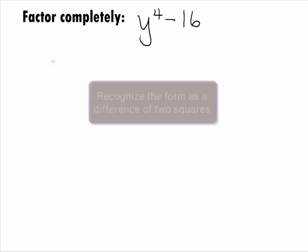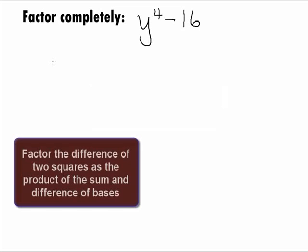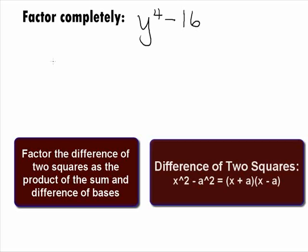Next, we want to check out the binomial. It looks like y to the 4th minus 16 fits the form of a difference of 2 squares. A reminder that we can factor the difference of 2 squares as the product of the sum and difference of the bases that are being squared. For example, if we had x squared minus a squared, it would factor as x plus a times x minus a.